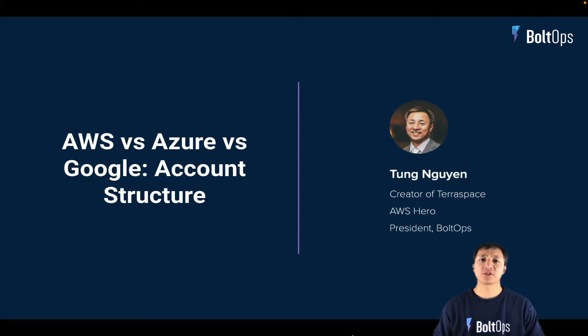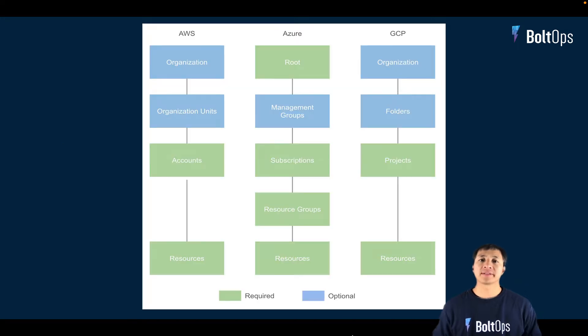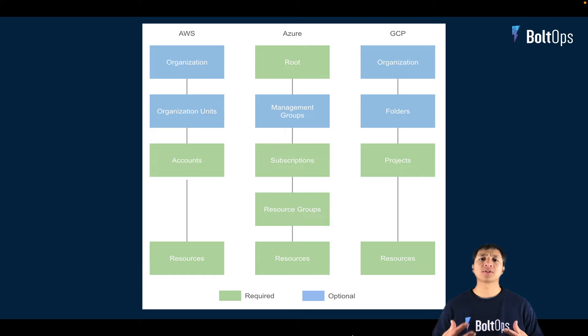Going to cover the different account structures between these three cloud providers: AWS, Azure, and Google. I put together this diagram, and I'm going to start in the middle because I think that's where most people are used to working.